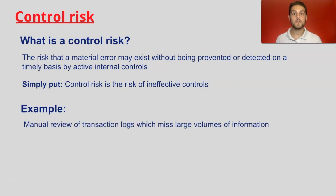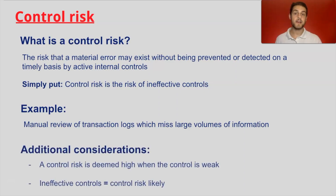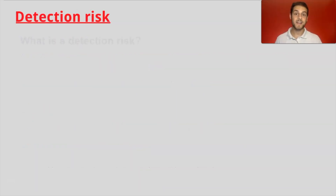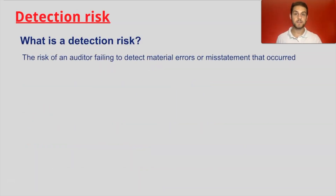An example of control risk: a manual review of transaction logs which misses large volumes of information. If someone is manually reviewing a large volume of logs, there may be human error. Because this control is designed poorly, we would say it has a high control risk. Control risk is deemed high when the control is weak, and if you have ineffective controls, control risk is likely high.